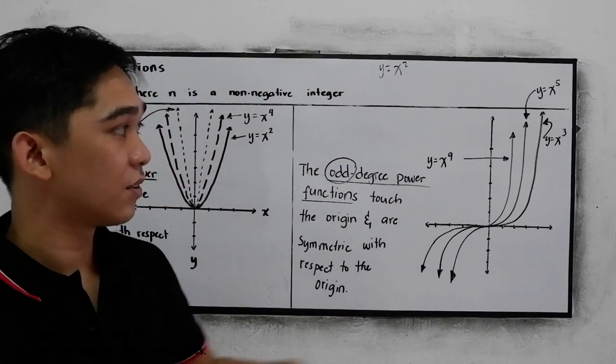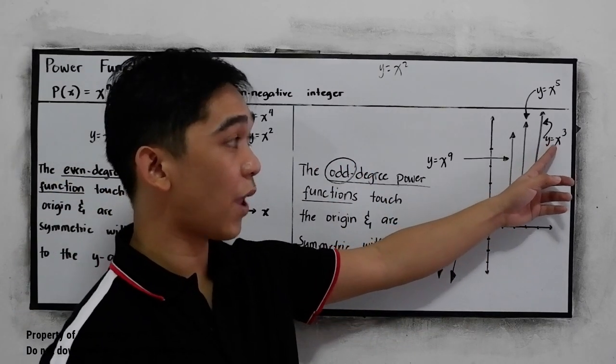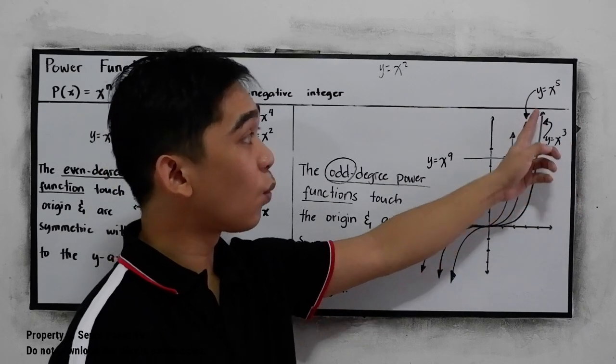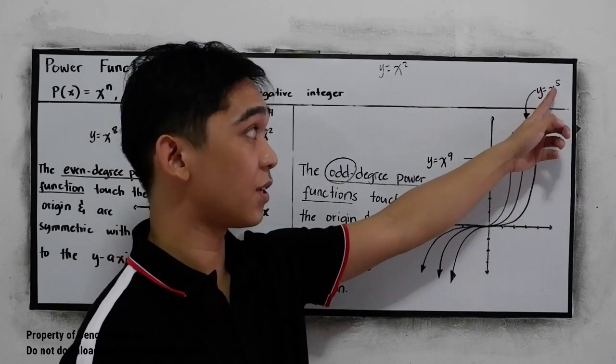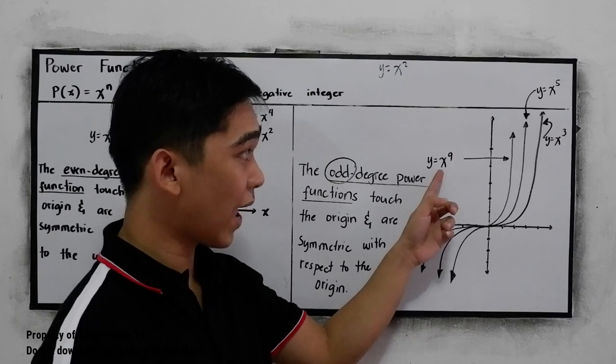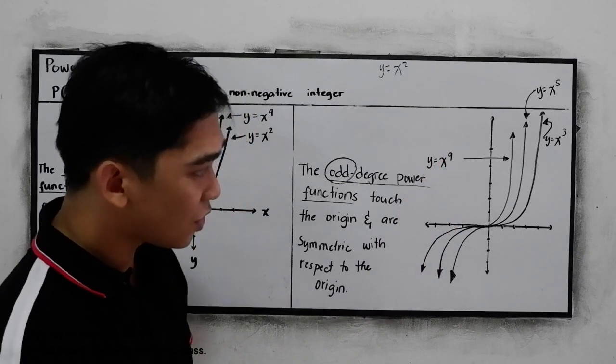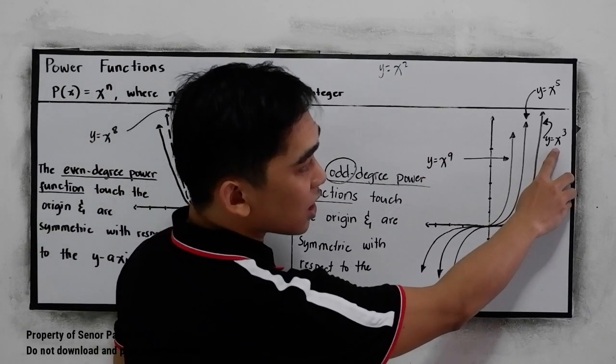So we have y = x^3, y = x^5, and y = x^9. So for the graphs, if we have y = x^3, so this is our graph.